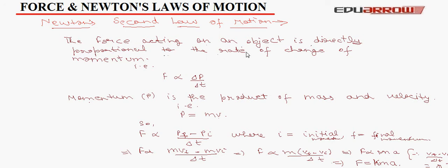By directly proportional, we mean that if del P upon del T increases, then force increases. And if del P upon del T decreases, then force decreases. So, F is directly proportional to P_F minus P_I upon del T where I stands for initial momentum and F stands for final momentum. We can write P_F as M V_F and P_I as M V_I. So, F is directly proportional to M V_F minus M V_I upon del T. That is, F directly proportional to M(V_F minus V_I) upon del T. And we know that V_F minus V_I upon del T is actually acceleration. So, F is directly proportional to mass into acceleration. And removing the sign of proportionality by taking a constant K, F is K M A.